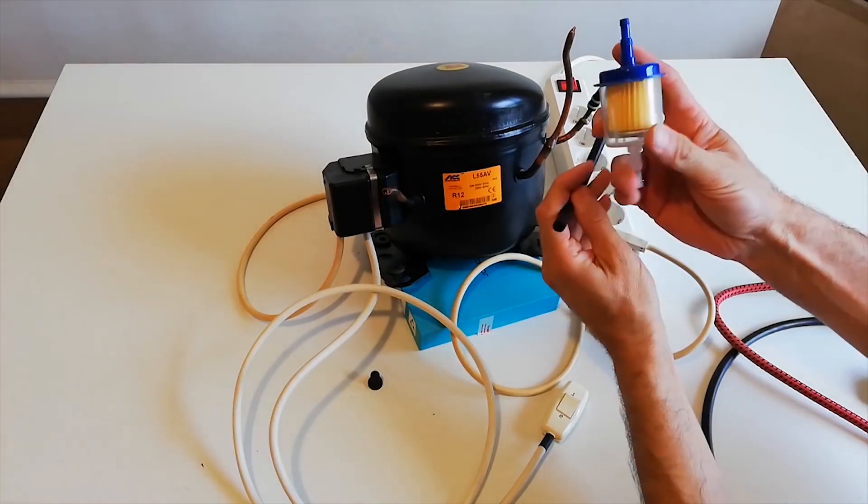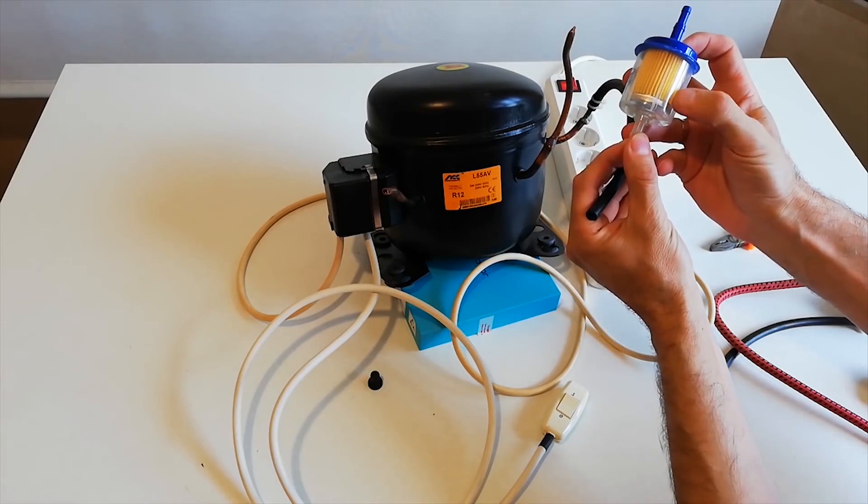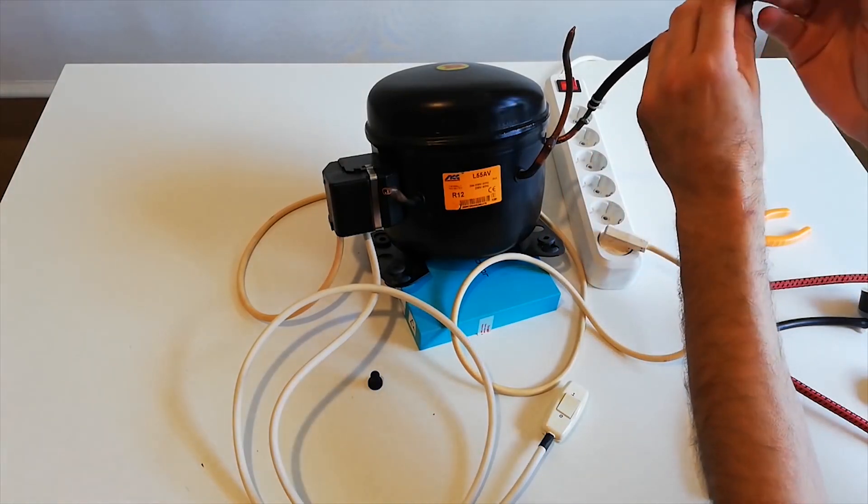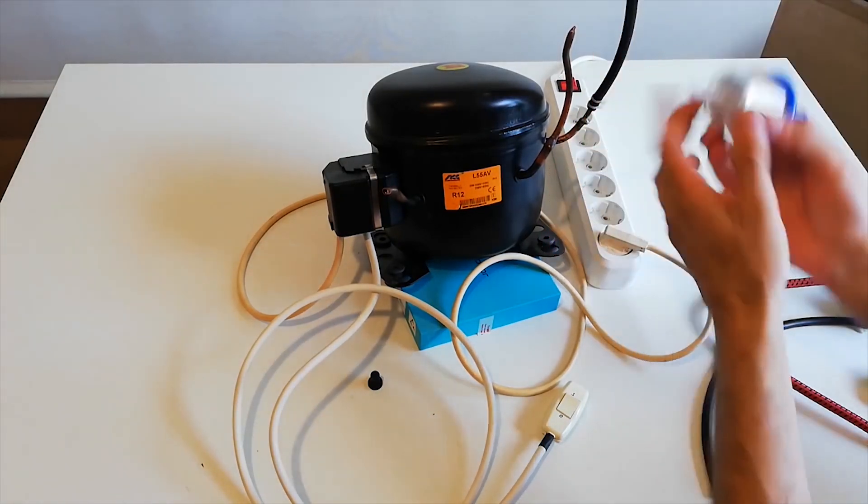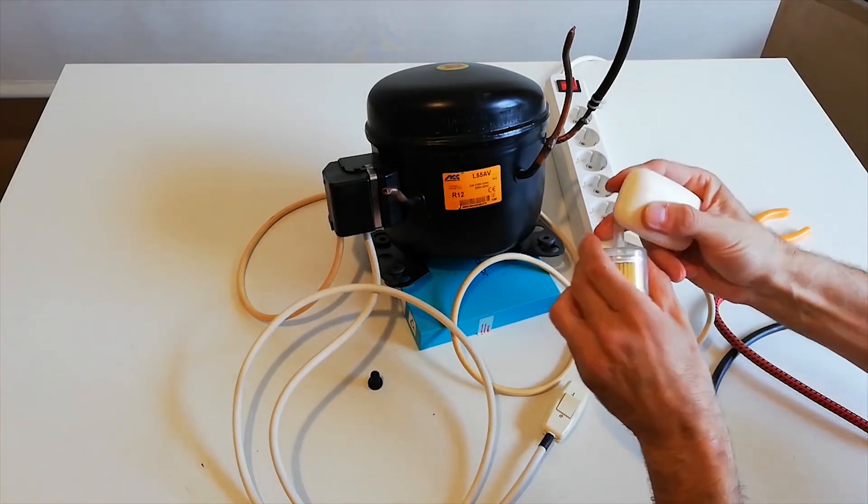Now we place the air filter here. Pay attention to the direction of the filter flow. It is marked with an arrow. To make it easier to put on an air filter, we will lubricate it and it is best to lubricate with soap.